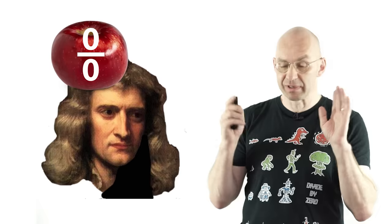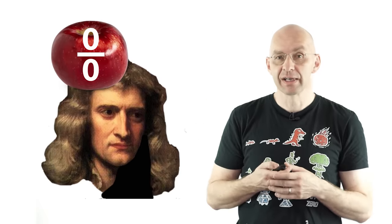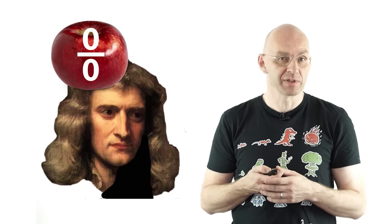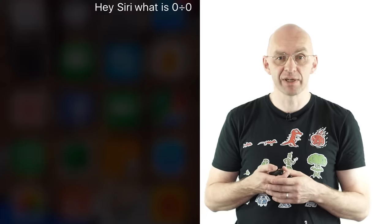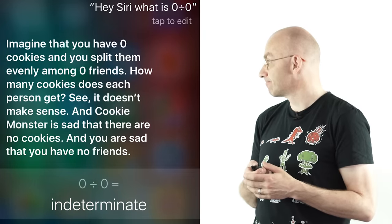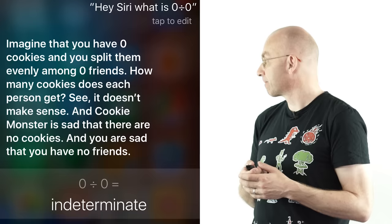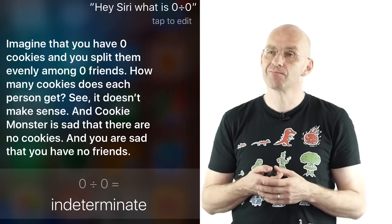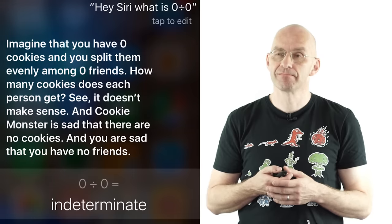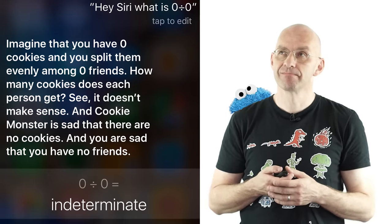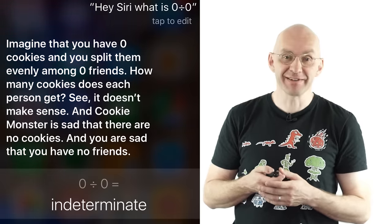Alright. Before we go on and maybe you don't believe anything I said so far. Let's just ask our smartphone what zero divided by zero is. So Siri. Imagine that you have zero cookies and you split them evenly among zero friends. How many cookies does each person get? See? It doesn't make sense. And Cookie Monster is sad that there are no cookies. And you are sad that you have no friends.